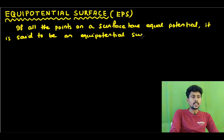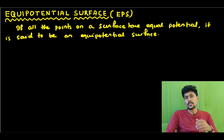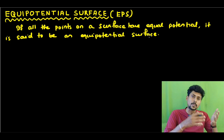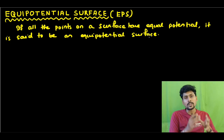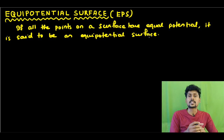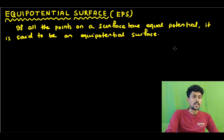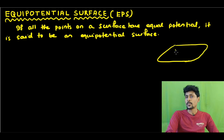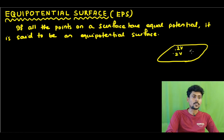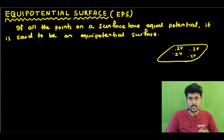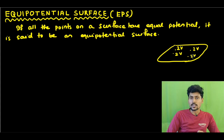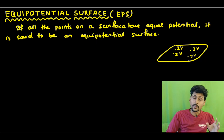It is very easy to remember this definition. If all points on a surface are at the same potential — say 2V — then that surface is called an equipotential surface, or EPS. Now I will write some of the important properties of EPS.